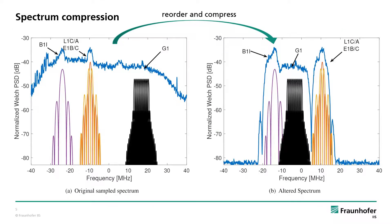Second, practical methods to restructure the spectrum are considered. It allows the signals of interest for a GNSS receiver to be compressed into a smaller band to reduce sampling rates and data throughput. Such an approach is particularly interesting for recording platforms for software-defined radio receivers. Here is an example with the L1 band, where the open signals for all four major global systems are compressed within 40 MHz of bandwidth.